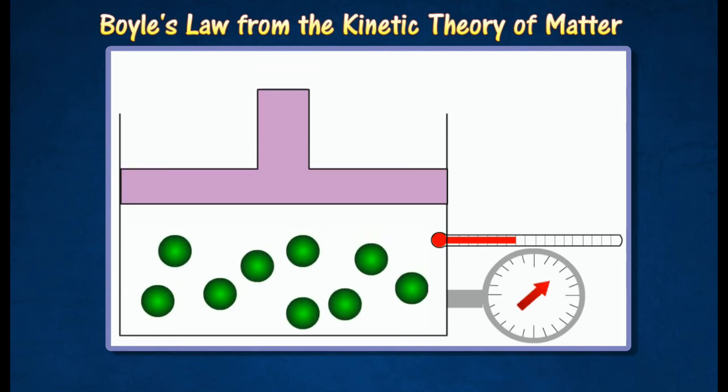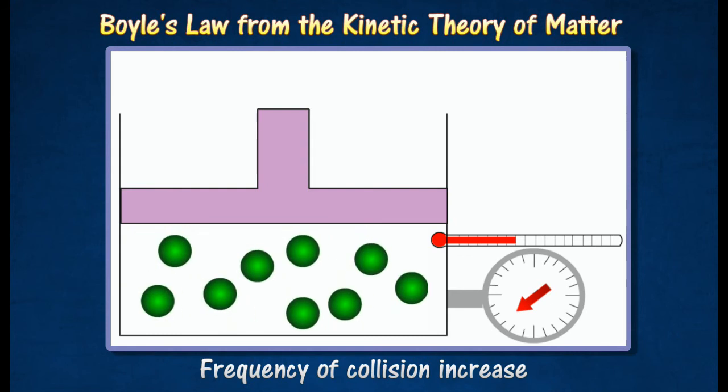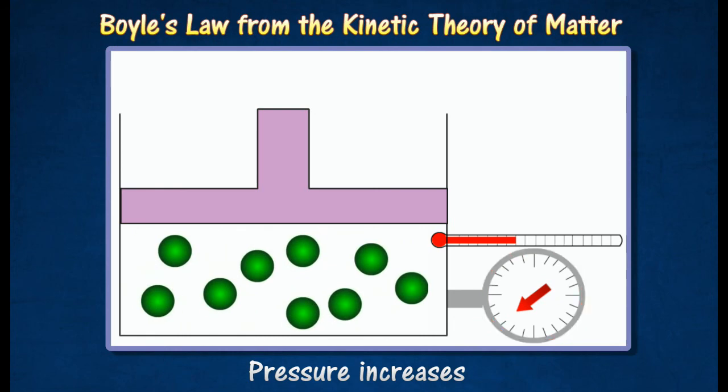When the gas is compressed, the number of particles per unit volume of gas increases. Therefore, the frequency of collisions between the particles and the walls of the container increases, resulting in a corresponding increase in the pressure of the gas.